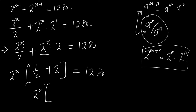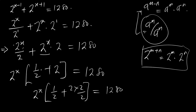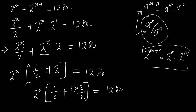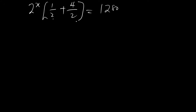So you have 2 to the power x times the bracket one half plus 2, equal to 1280. Now, this 2 is the same thing as 4 over 2, because 2 times 2 divided by 2 equals 2. We do this to make the denominators the same.